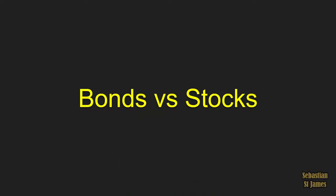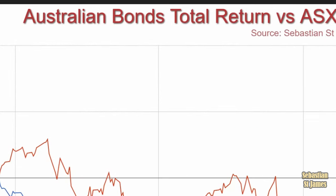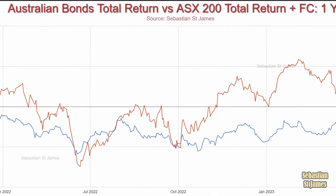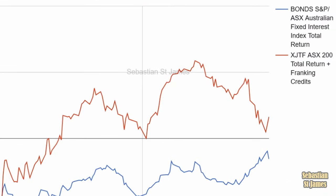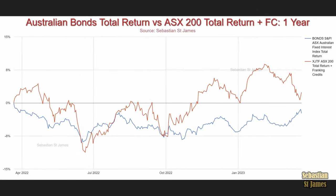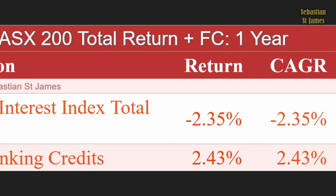Bonds versus stocks — which one performs better, and do bonds actually work as a hedge so that when the stock market crashes, bonds smooth out your overall portfolio? This is Australian bonds total return — the coupon paid out plus any price fluctuation if you held the entire ETF — versus the ASX total return plus franking credits over one year. Red is the ASX200, which returned a positive result, while bonds have gone negative. Bonds returned minus 2.35% including the coupon; the ASX200 over the same period, 2.43%.